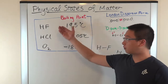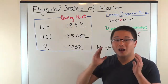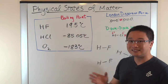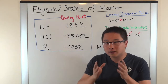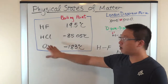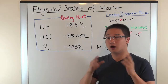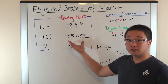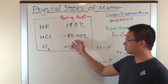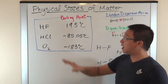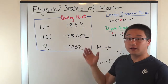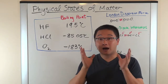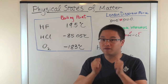Now let's look at hydrogen fluoride. Its boiling point is a lot higher — we're not talking about negative numbers anymore, we're talking about positive 19.5 degrees Celsius. So O2 has very weak attraction between molecules, giving it a very low boiling point. Hydrogen chloride has a higher boiling point because the attraction is stronger. And hydrogen fluoride has an even higher boiling point, meaning the attraction between hydrogen fluoride molecules is going to be very, very strong.